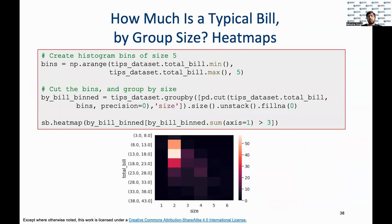Heat maps are another interesting plot that emphasize the importance of some recurring events. Here we are trying to understand what the typical bill amount for different group sizes is. Since in our data the most recurring party size was the size of two, we see on the heat map that party size two has high occurrence but is low on the total bill amount, while party sizes of six, although very less in occurrence count, pay a higher total bill.